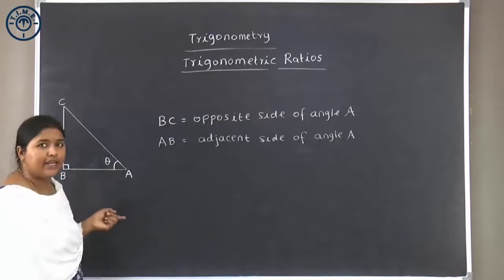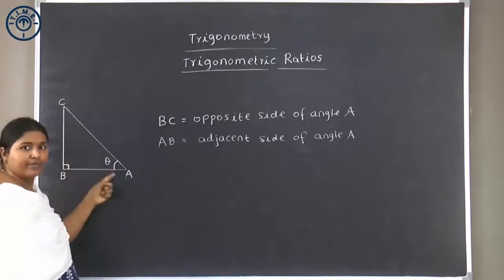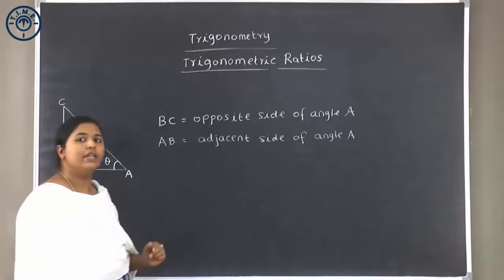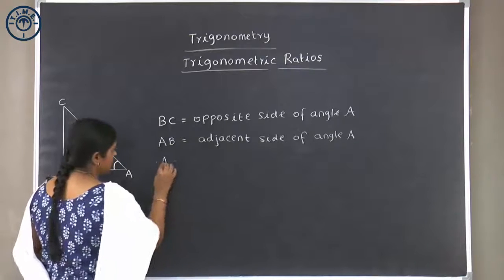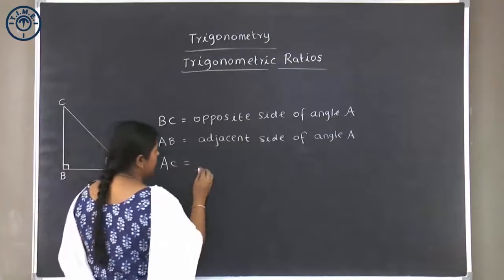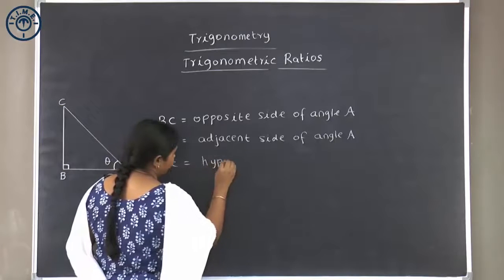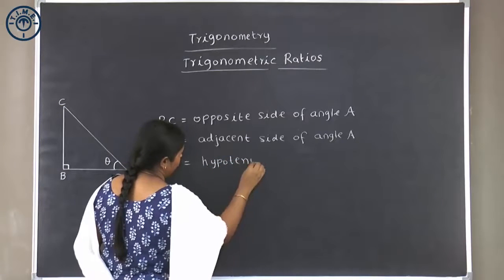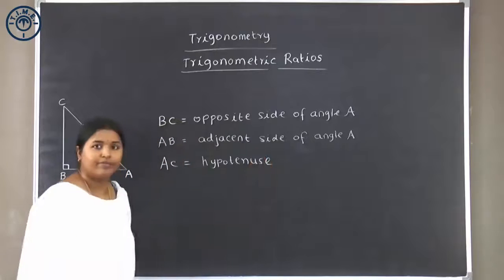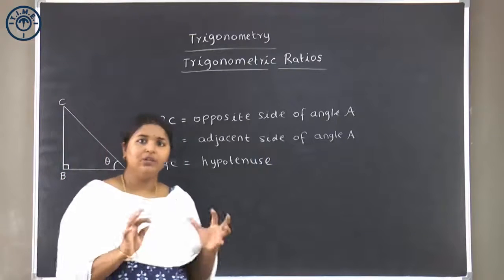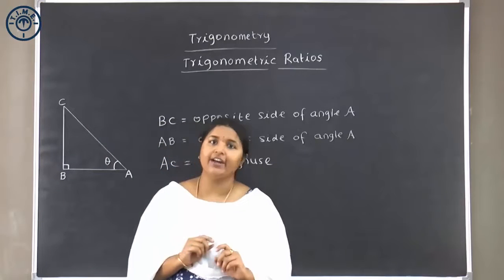The longest side here is AC. AC is called the hypotenuse. So AC, the longest side, is called the hypotenuse. Now we know the special names of the three sides of a right angled triangle.